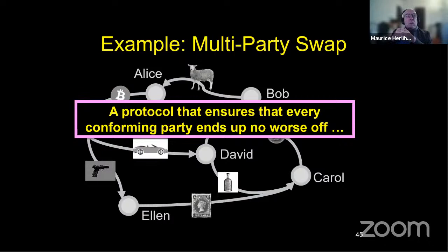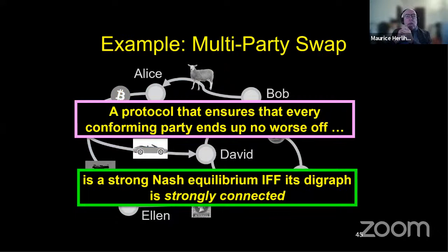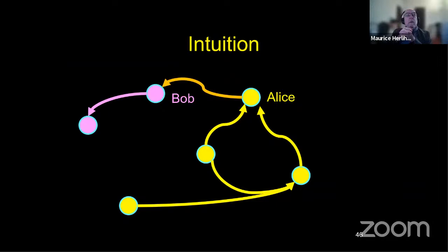Now, there's a theorem that says that a protocol that ensures that every conforming party ends up no worse off. That is any protocol that satisfies our atomicity condition is also a strong Nash equilibrium if and only if the directed graph is strongly connected. So this relates the game theoretic aspects of the deal to the topological properties of this graph. And of course, I won't go through the proof, but I can, there's a very clear intuition why this is true. So here is a swap graph that isn't strongly connected. So here we have the pink part. There's no path from the pink part back to the yellow part. So these people are in some sense free riders. So they are getting things. Assets are flowing into the subgraph, but nothing is flowing out.